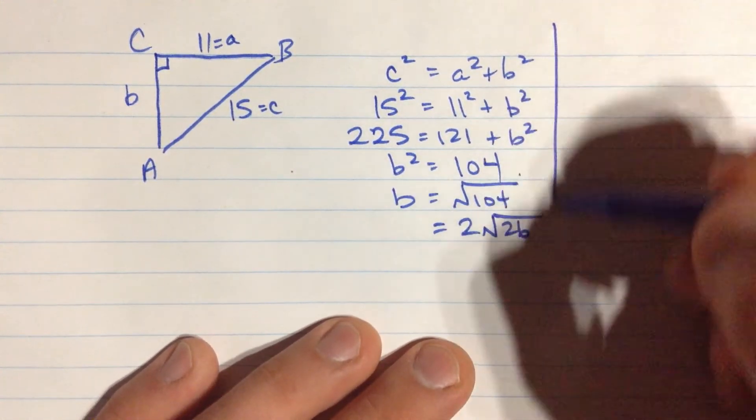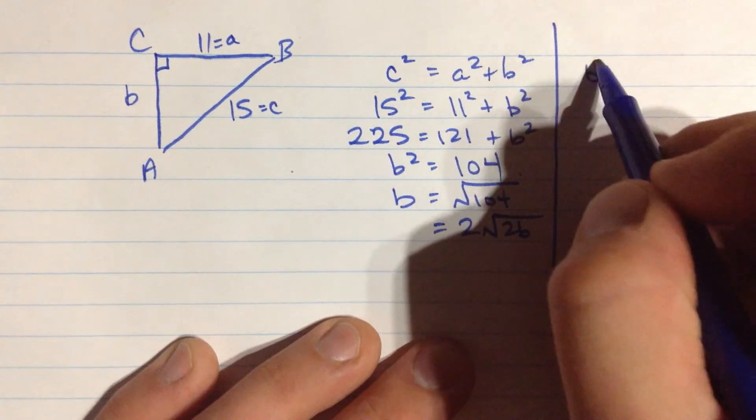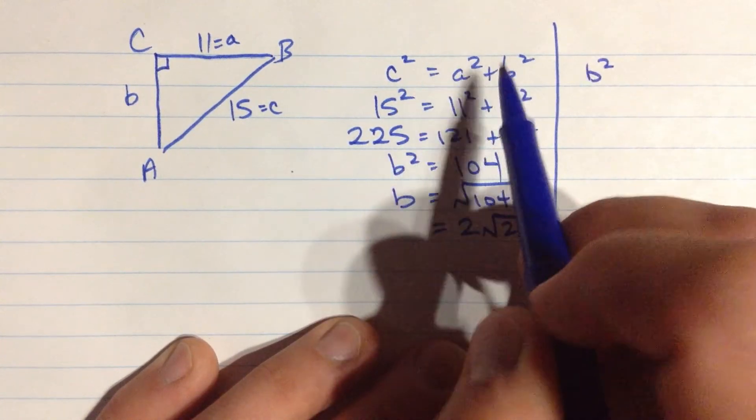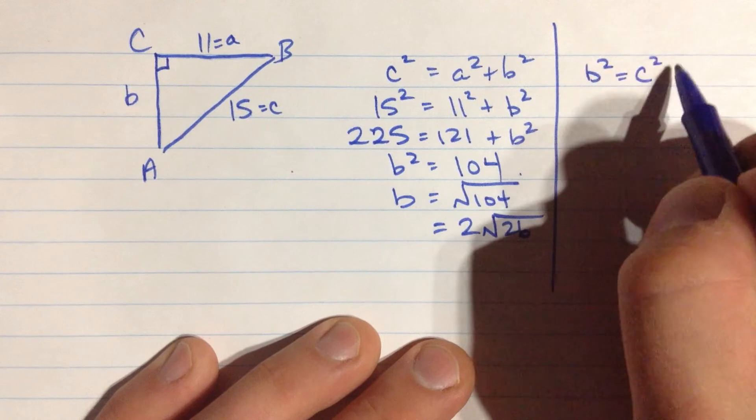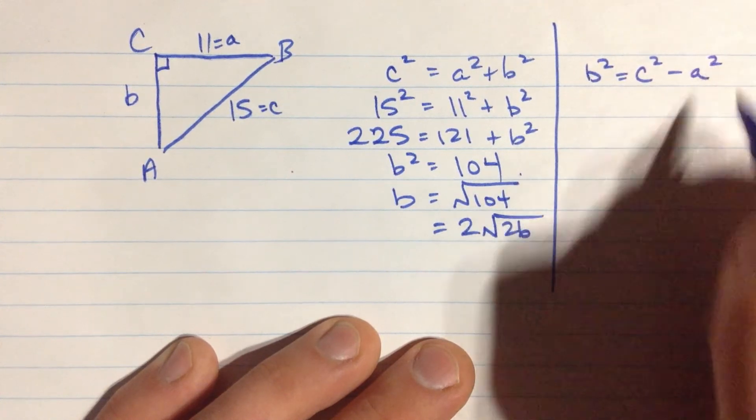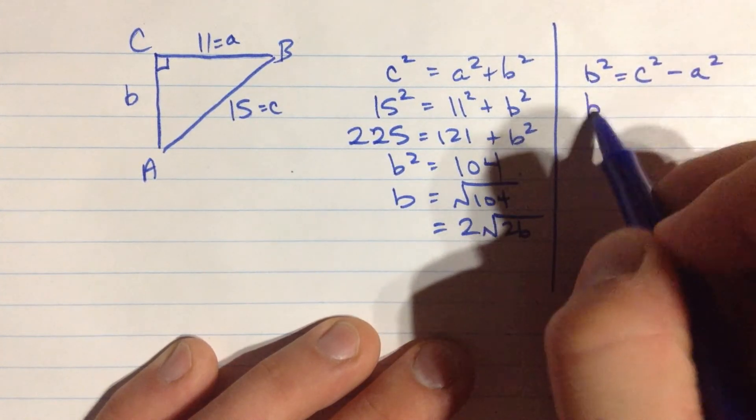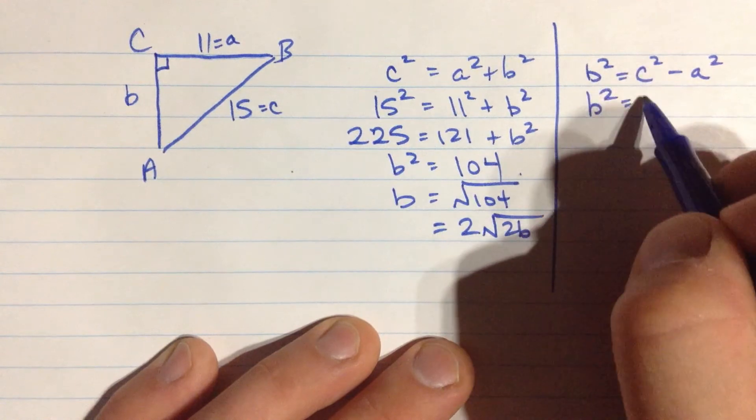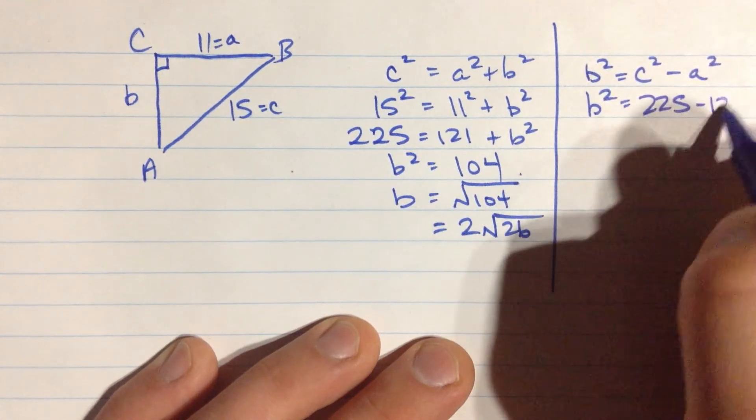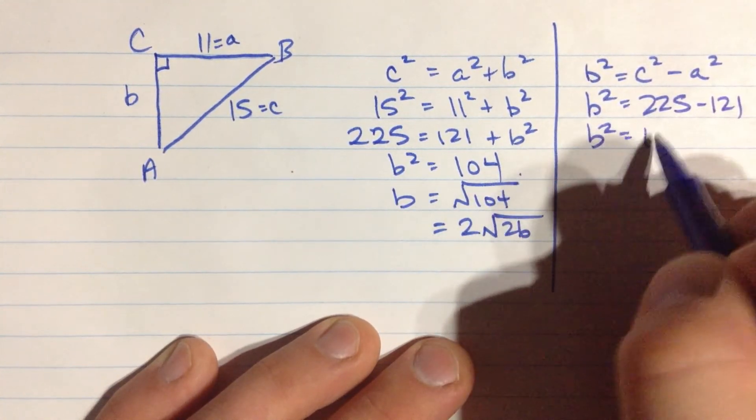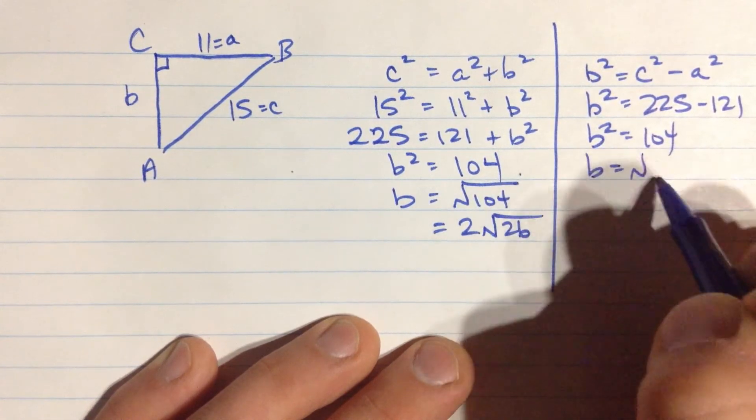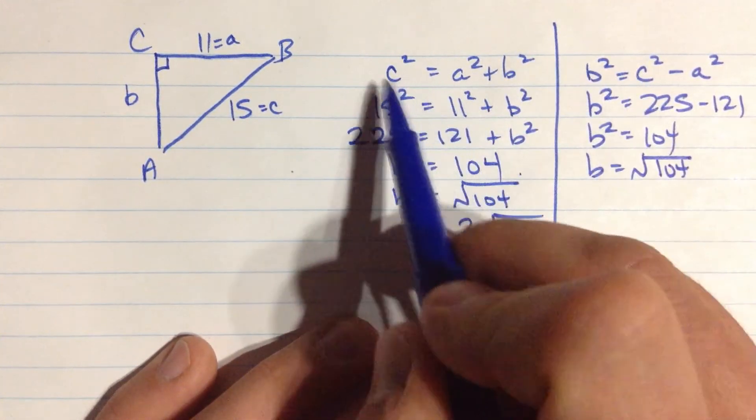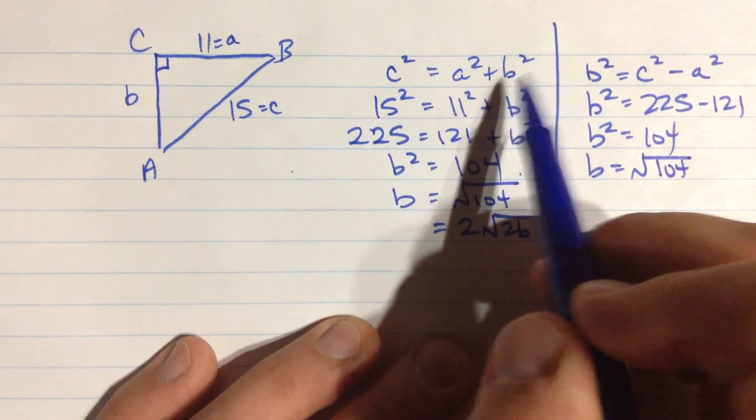The other way to do this is to, b squared, if I rearrange this right away at the beginning, is equal to the square of the long side minus the square of the other short side. b squared is, when you do all this out, 225 minus 121. So, b squared is 104. And b is the square root of 104. So, you can just start with this, the basic version of this.